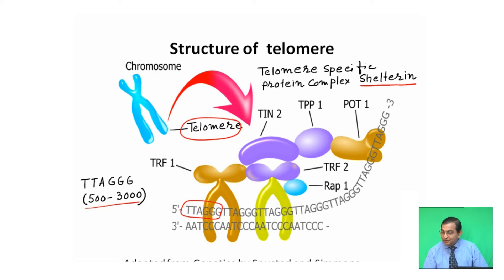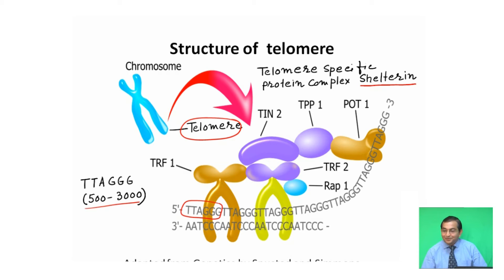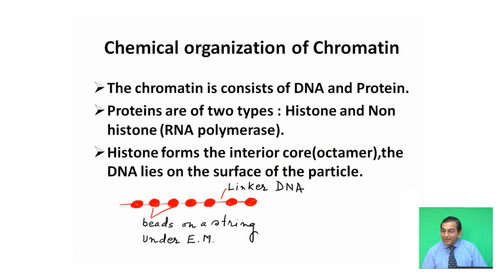These telomeric repeat sequences are protected by a telomere-specific protein complex called shelterin. Shelterin consists of the proteins TIN2, TPP1, Protection of Telomeres 1 (POT1), TRF1, TRF2, and RAP1. This protein complex protects the repeat sequences at the telomeric end.